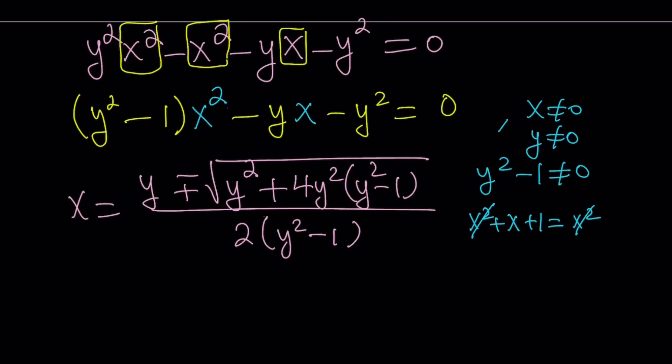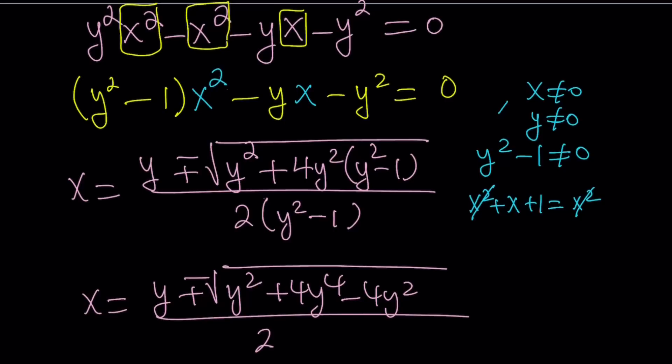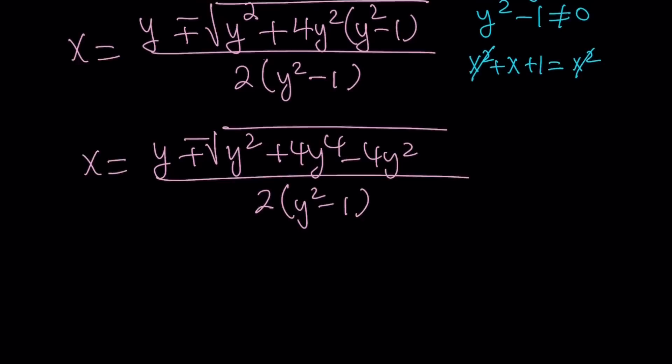Now notice that y squared, if y squared is equal to 1, then the denominator is 0 and our expression is going to be undefined. So what am I going to do with this? Well, maybe we can simplify it. Let's try to simplify it. Inside the radical, we have the following. y squared plus 4y to the fourth minus 4y squared.